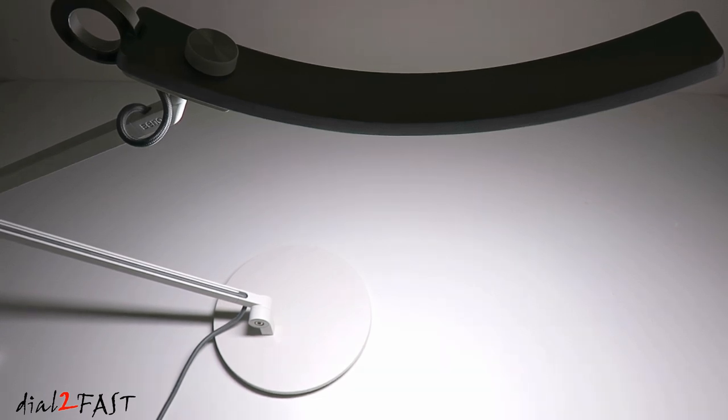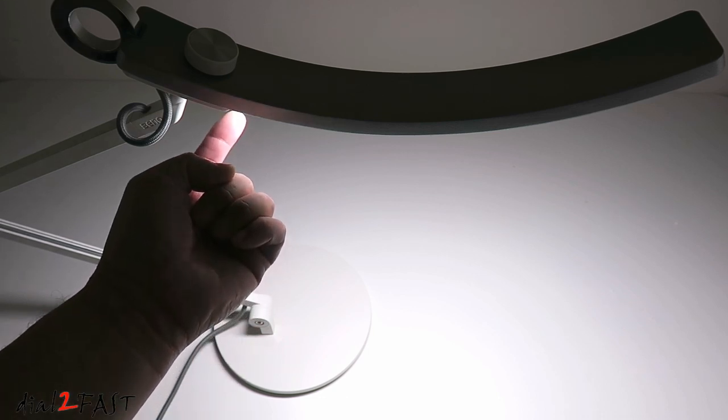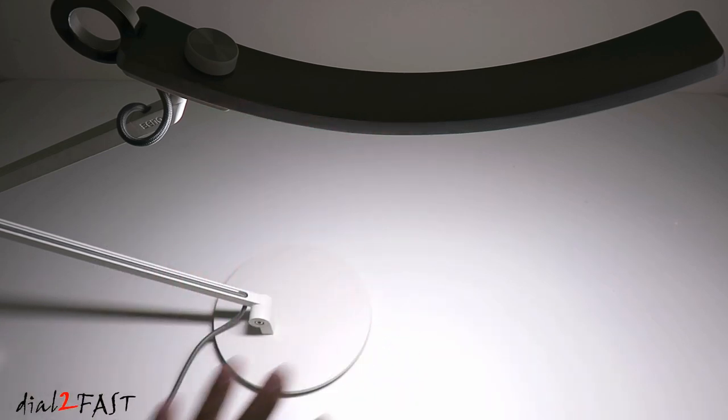Now so far everything I've showed you is the manual controls. And this lamp does have a smart function. Underneath the lamp is an eye care sensor and it can actually sense the ambient light on your work surface and it'll adjust the light automatically.